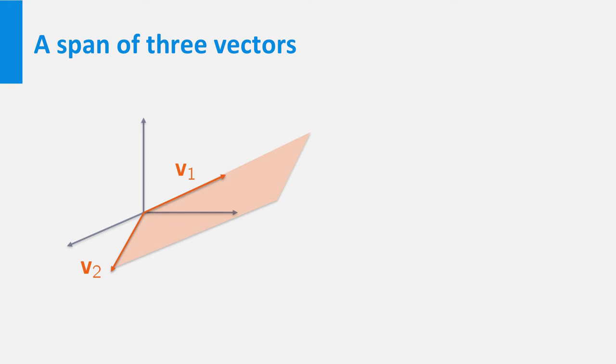You may have already noticed that V3 lies in the plane defined by V2 and V1. This means that if we take the span of V1, V2, and V3, we actually just get the span of V1 and V2. Adding the vector V3 doesn't really make the span any larger.